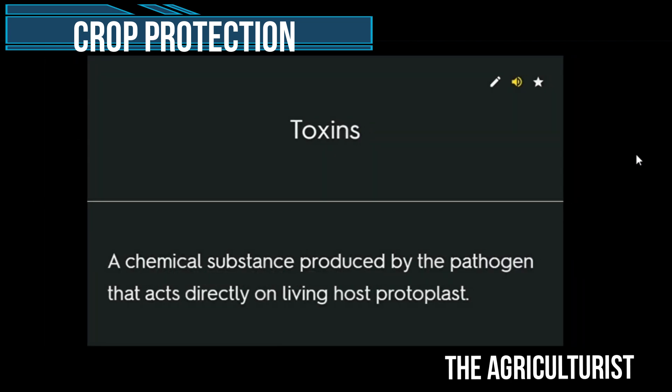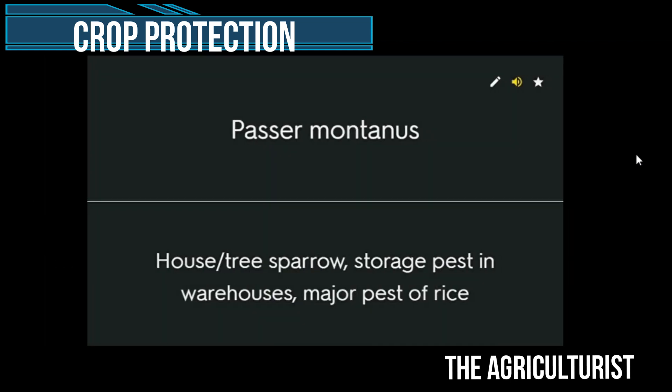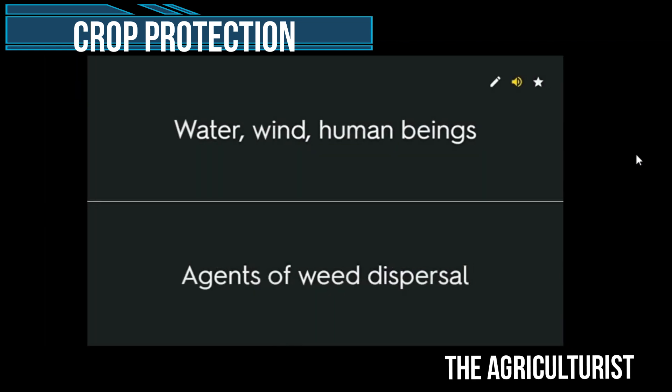Toxins — a chemical substance produced by the pathogen that acts directly on living host protoplast. Passer montanus, house tree sparrow — storage pest in warehouses, major pest of rice. Water, wind, human beings — agents of weed dispersal.